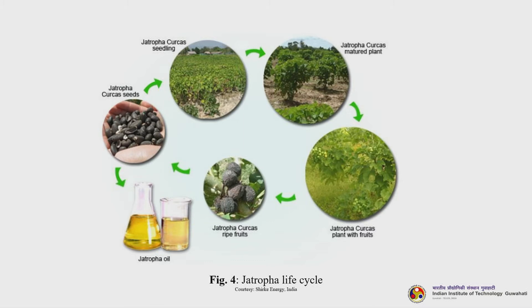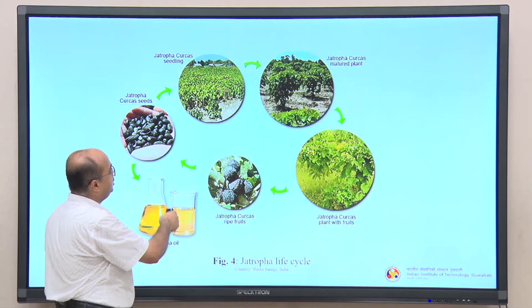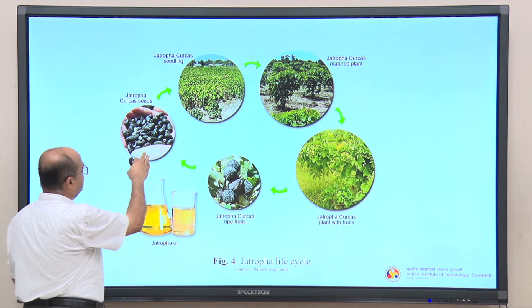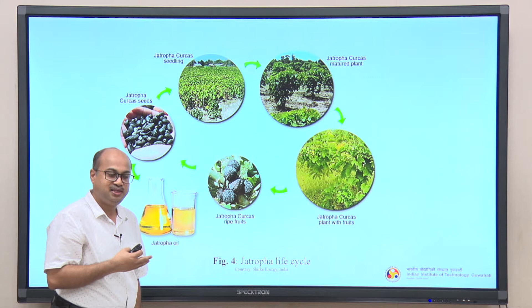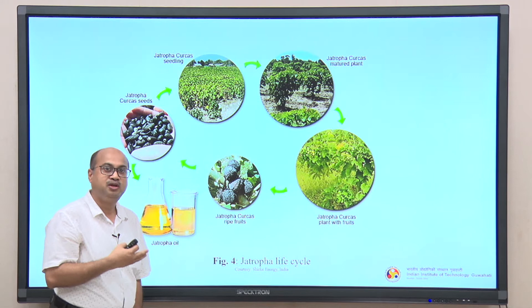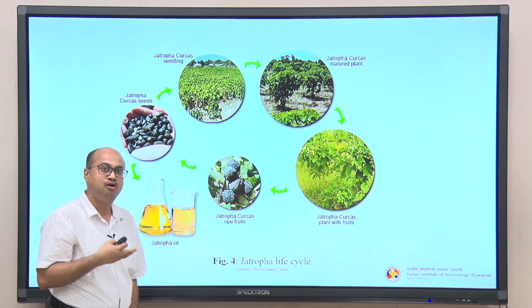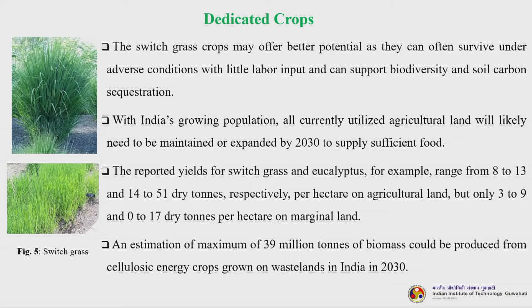The Jatropha cycle goes from seeds to seedlings, to a mature plant bearing fruits, then fruits ripening, seed collection, and finally Jatropha oil converted to biodiesel. Jatropha failed because of its long lifecycle — you must wait years before the plant bears fruit — and because of its low oil yield. Nobody is talking about Jatropha anymore.